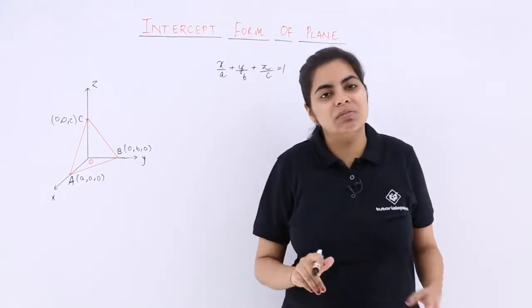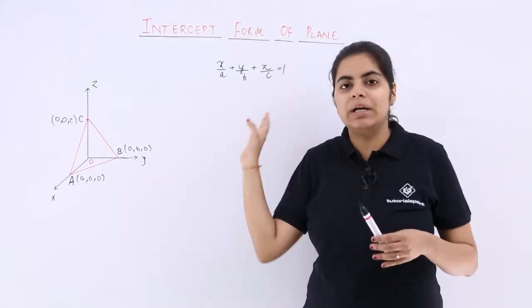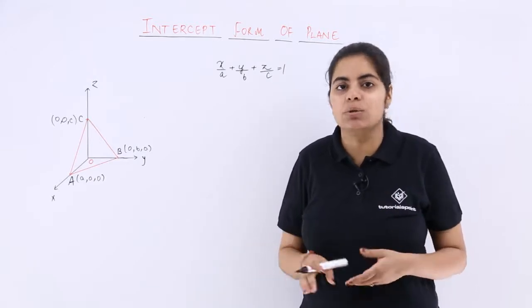In straight line geometry, we also have the intercept form. It doesn't include z in that case, but here it includes z/C as well.